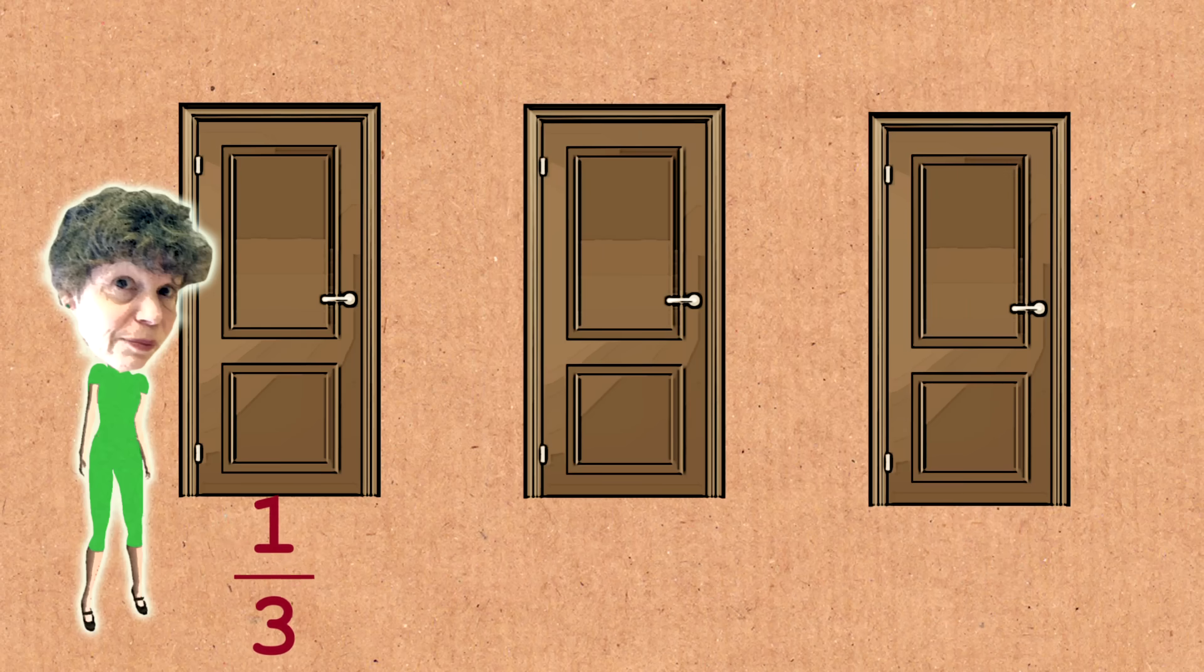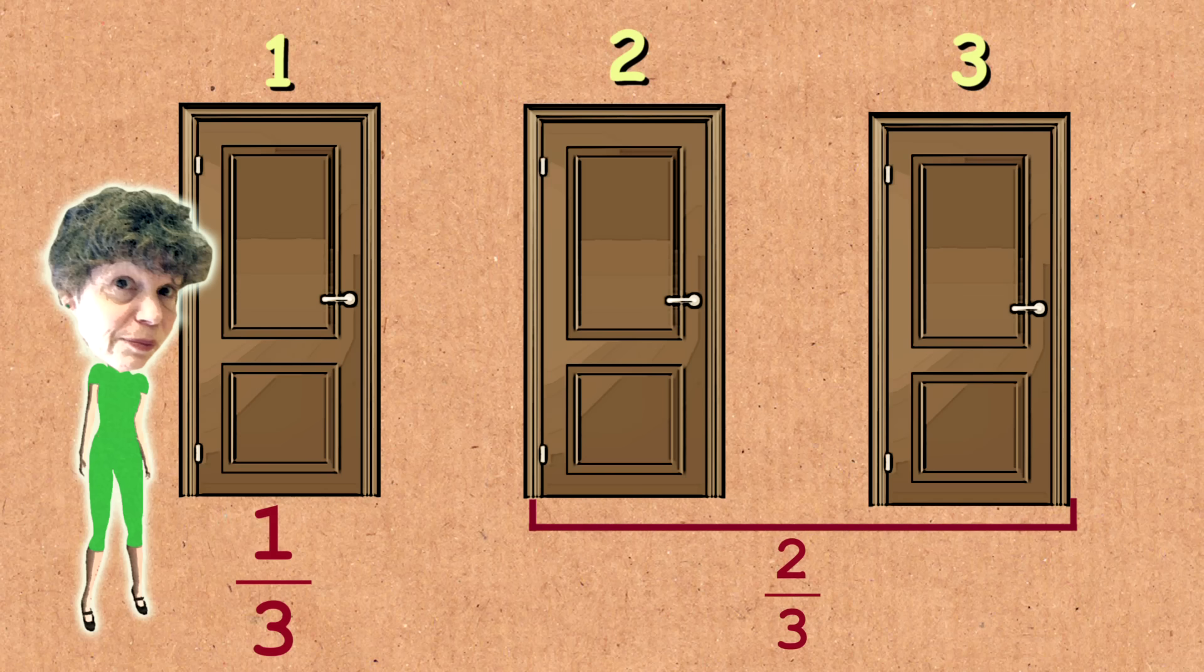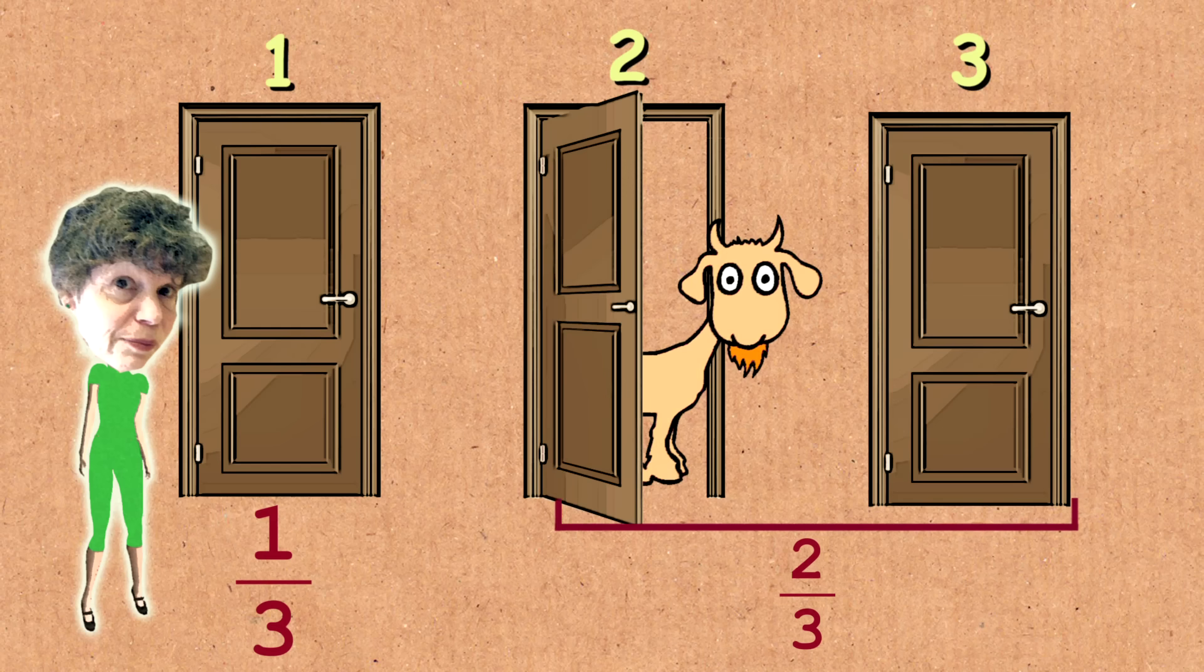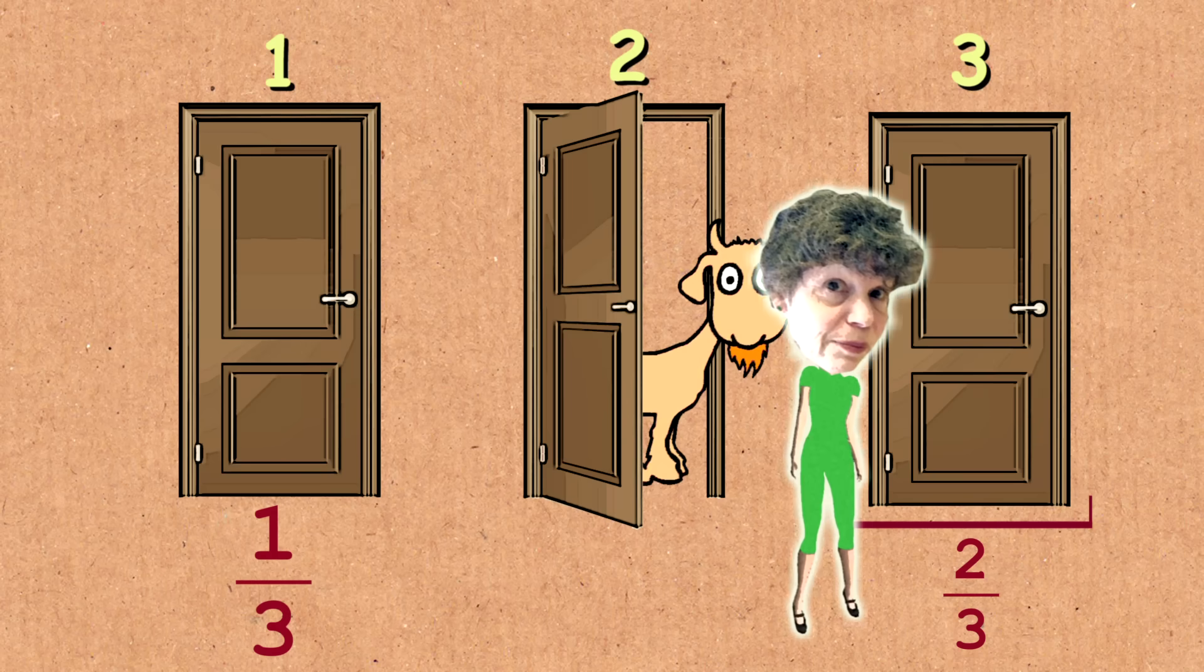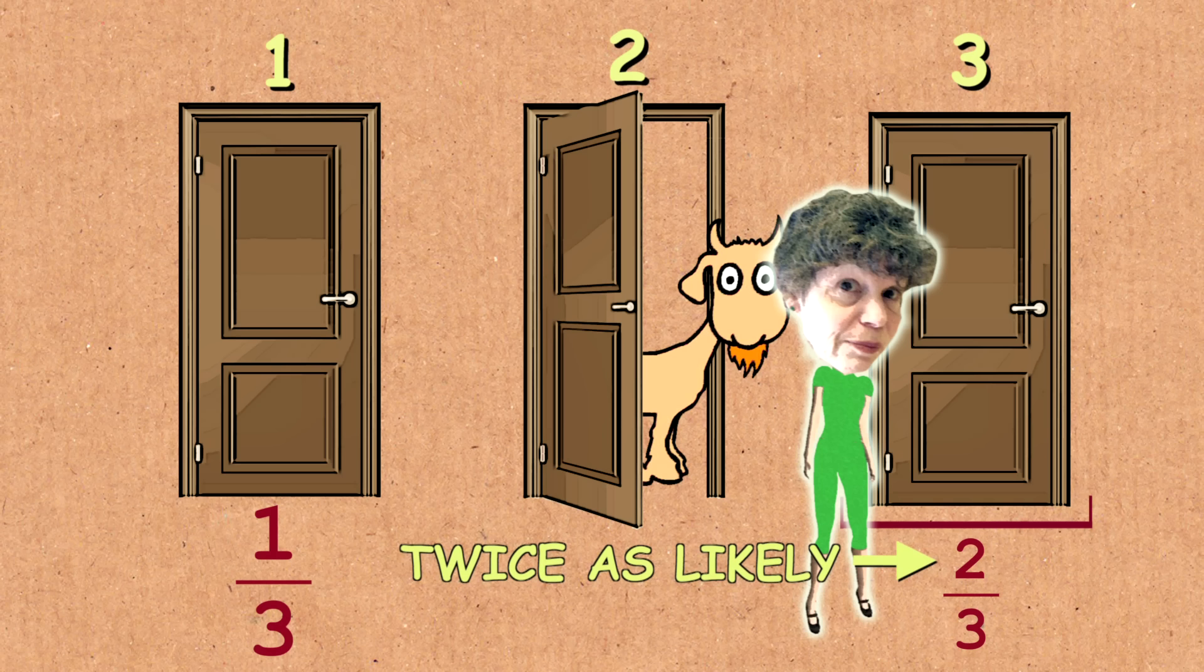So there is a one-third chance that the car is behind the door you picked initially. That means there must be a two-thirds chance, much greater, twice as big, that the car is somewhere else. And since we know that somewhere else cannot be door number two, because Monty showed us that, it's got to be over here. So this is what you should choose. You should switch. Twice as likely to have the car behind the door that you didn't pick as the door that you did. A two-thirds probability versus a one-third probability.